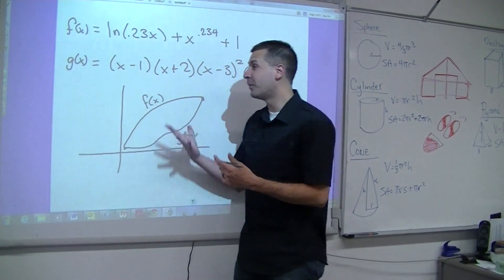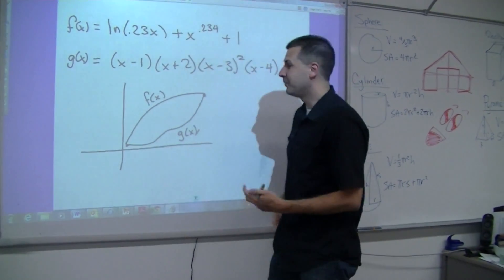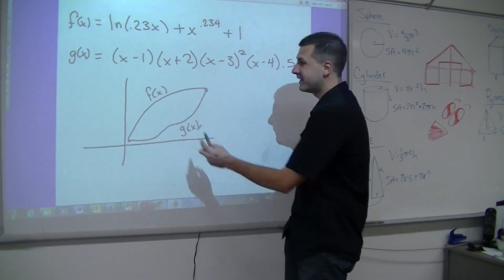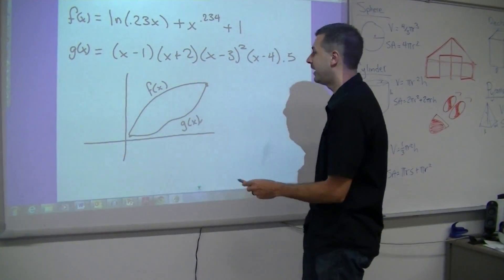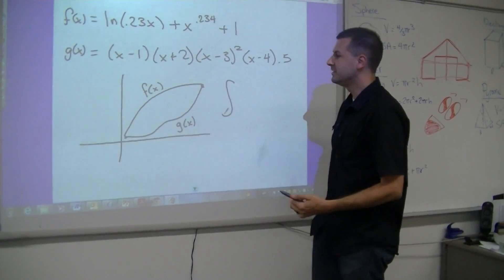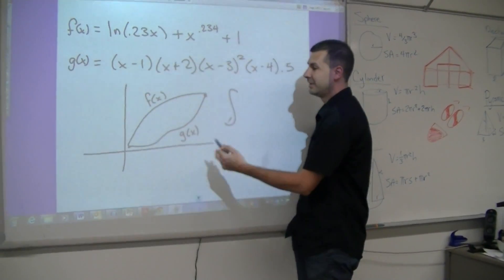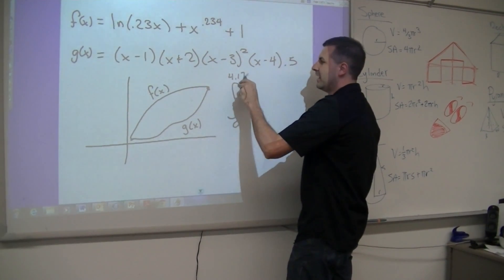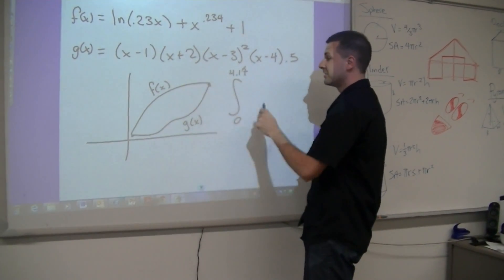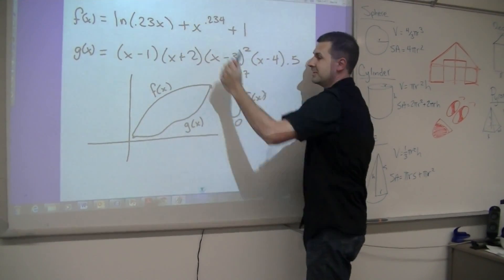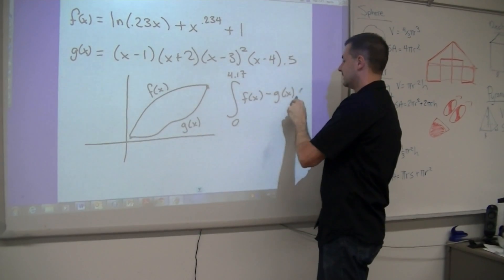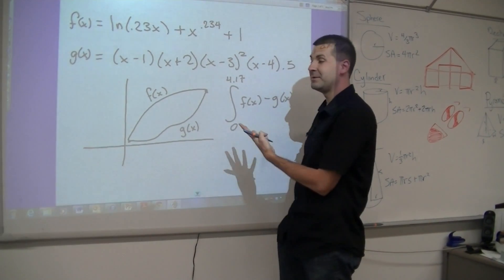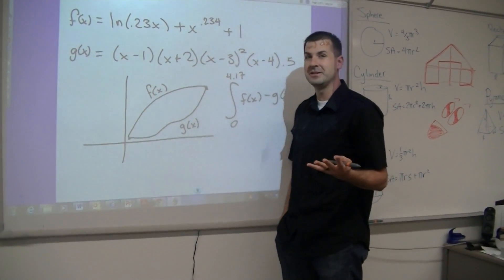All right, so Thomas, what we have here is what we were just talking about. We've got those two functions, and we need to simply find this area right here. We talked about how to set it up already. I've got function f(x) on top and g(x) on bottom. What we can do to find that area is we can do an integral, just like we talked about before. We're going to do the integral from a to b — that is the x-value from here to here — so that's from 0 to 4.17 of f(x) minus g(x). Then I just have to plug that into the calculator, and that will give me the answer. That's the setup — that's how we do every single one of these problems.